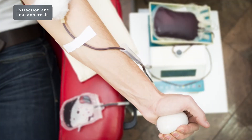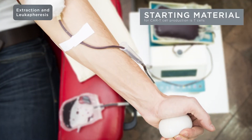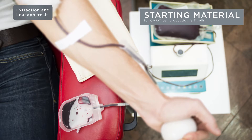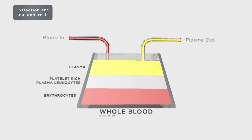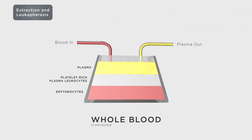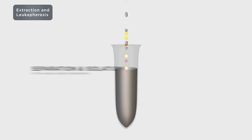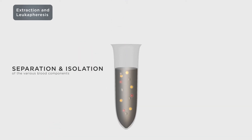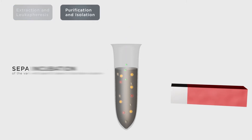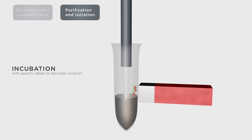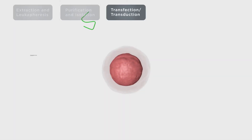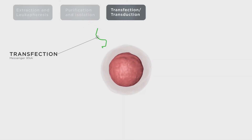The starting material for CAR T cell production, whether for research or therapeutic purposes, is T cells. First, whole blood is extracted. Leukapheresis is then performed to separate the blood components and isolate the white blood cells. The white blood cells are incubated with specific labels such as magnetic beads that facilitate T cell isolation. After isolation, the genes encoding the CAR are introduced.